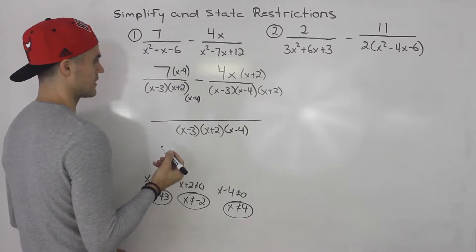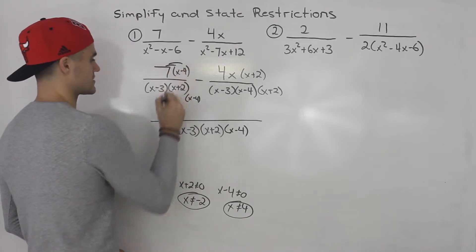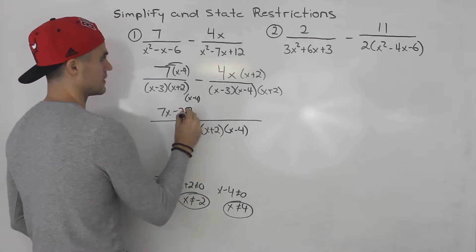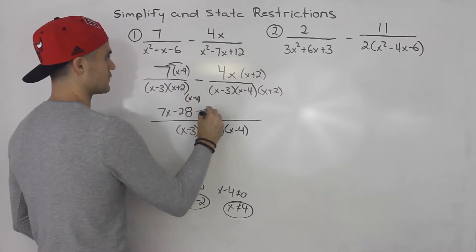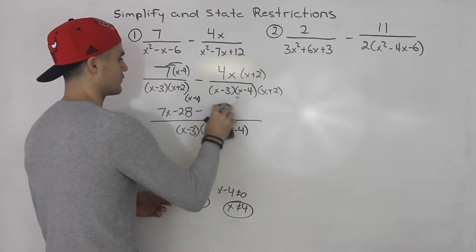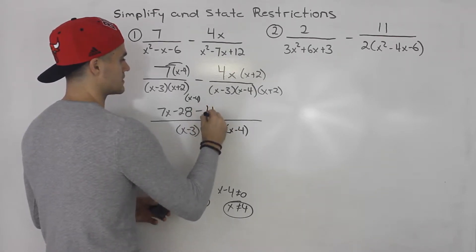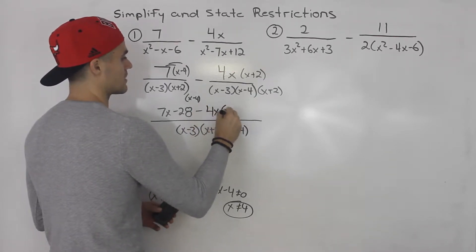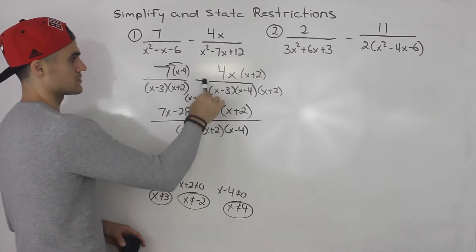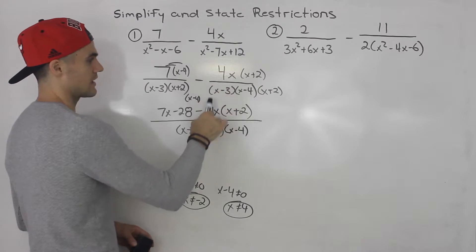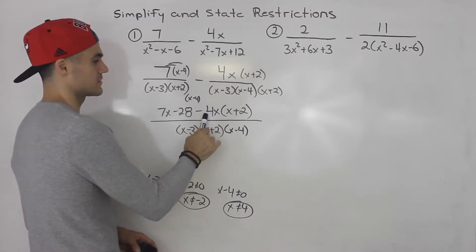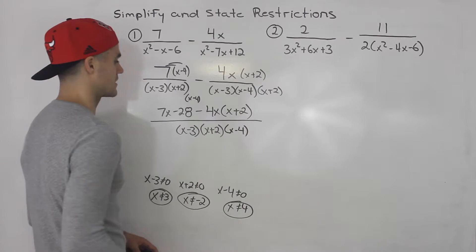We can now simplify. Distributing inside the bracket gives us seven x minus 28. Then here we have minus four x times the bracket x plus two. Be careful — students sometimes only distribute the negative to the first term, but this is a minus four x, so you have to distribute it through the whole bracket.